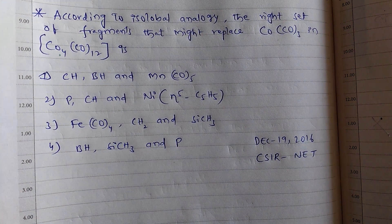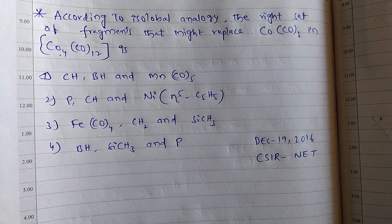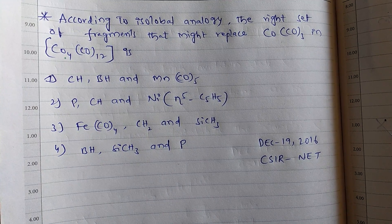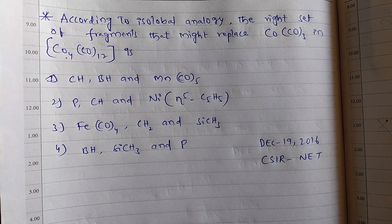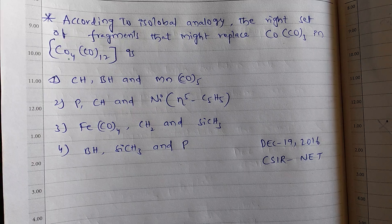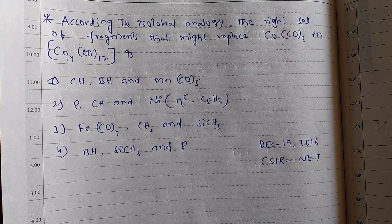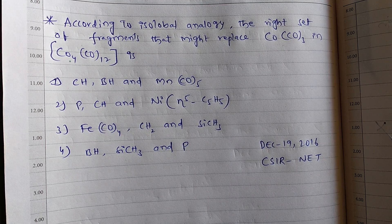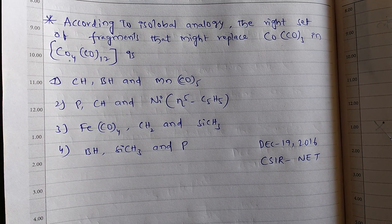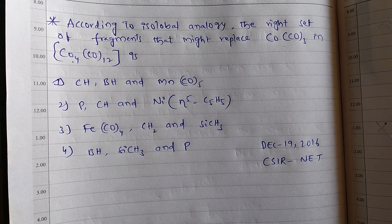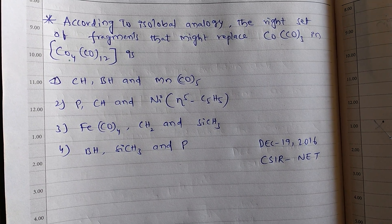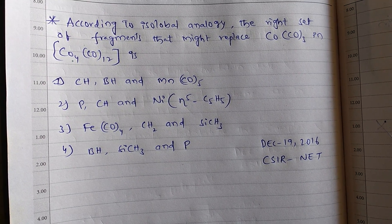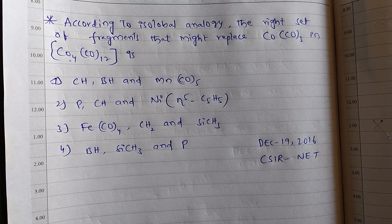First option: CH, BH, and Mn(CO)₅. Second option: P, CH, and Ni(CO)₄(C₅H₅). Third option: Fe(CO)₄, CH₂, and Si(CH₃). Fourth option: BH, Si(CH₃), and P, phosphorus.